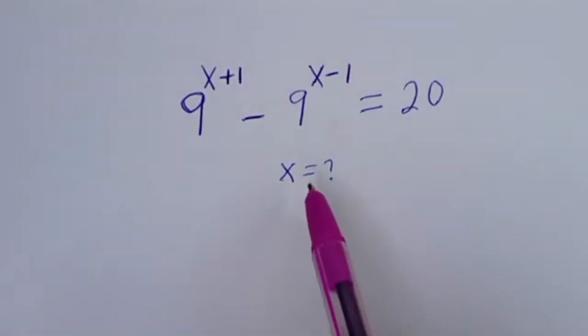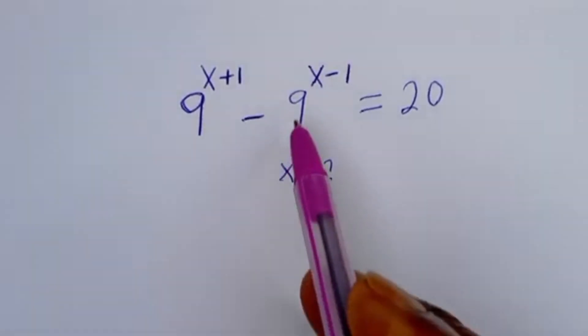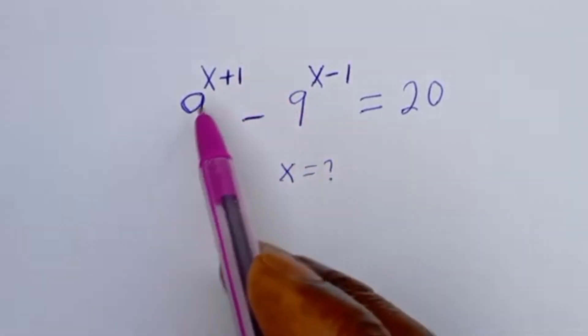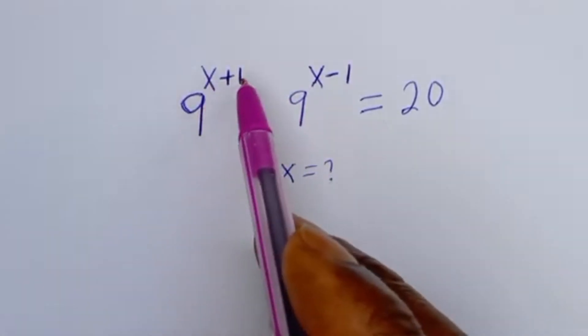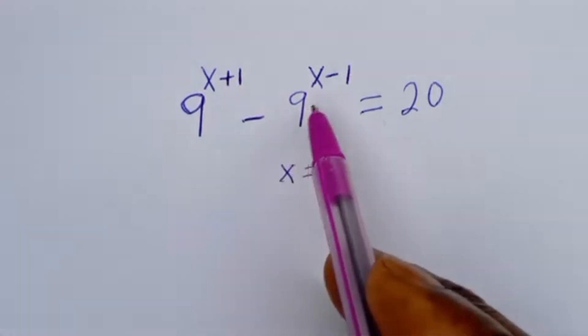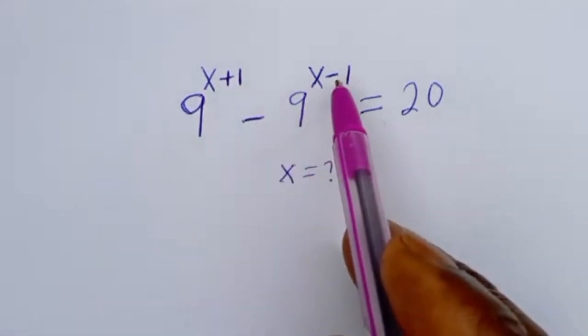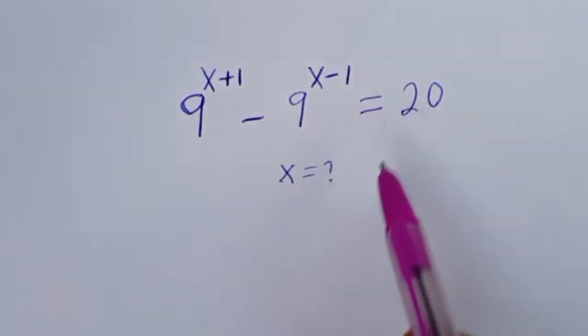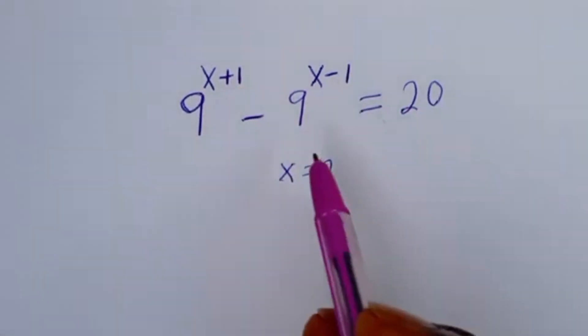Hello, you are welcome. How to solve for x in this equation: 9 to the power of x plus 1, minus 9 to the power of x minus 1, is equal to 20.